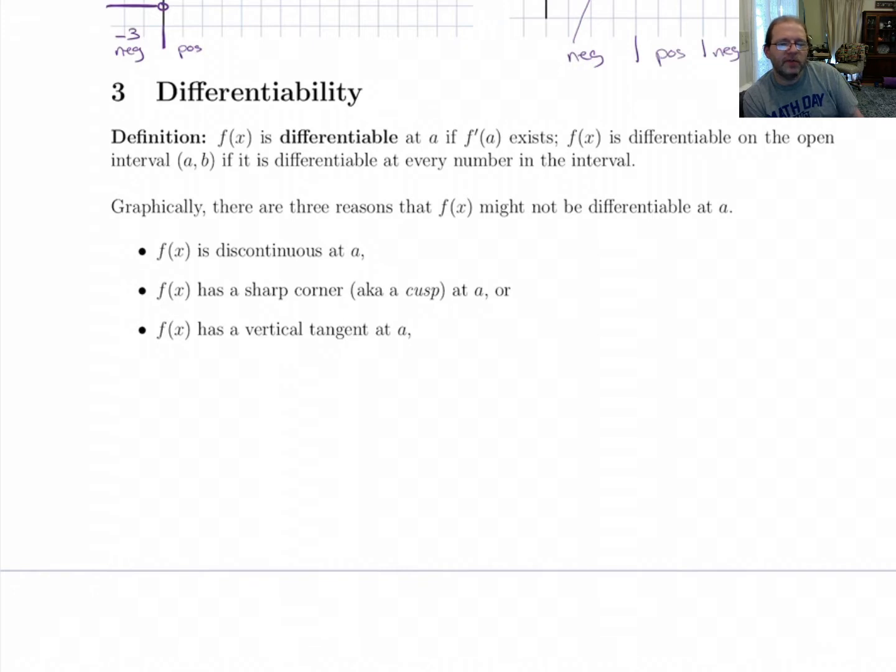So there are three reasons that a function might not be differentiable at a. And we've already seen one of those. One is if it's discontinuous at a. If you've got a function and it's got a vertical asymptote, then the derivative is not defined there.